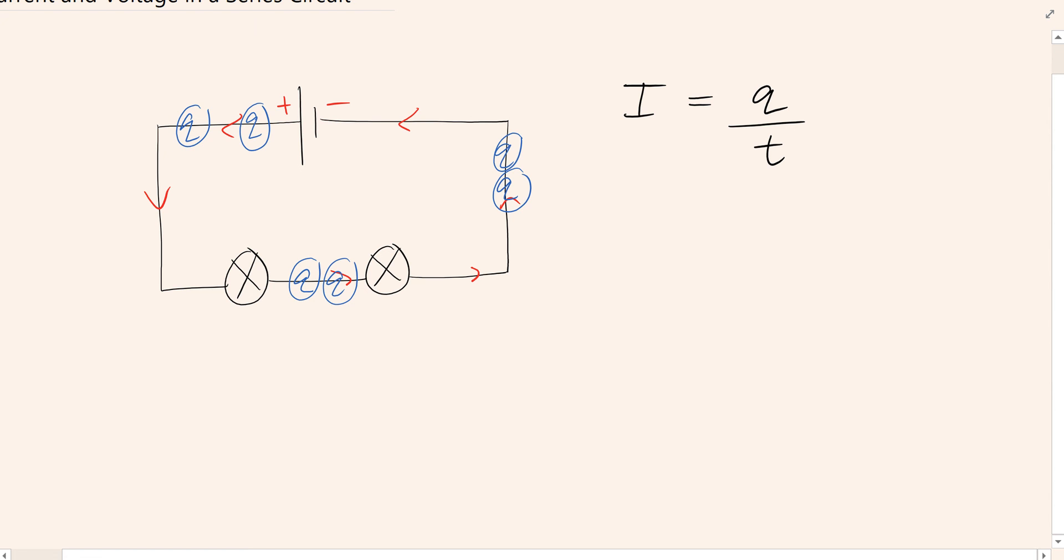So one really important first rule to understand is the current everywhere in the circuit is the same. So if I was to put an ammeter in this location, or this location, or anywhere in fact in the circuit, the current would be the same. So I_total is equal to I_1 is equal to I_2. The current is the same everywhere in the circuit.